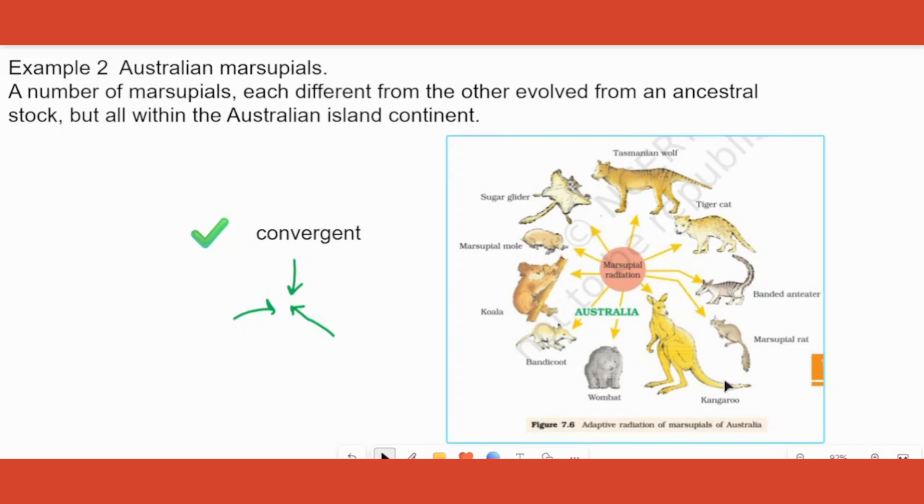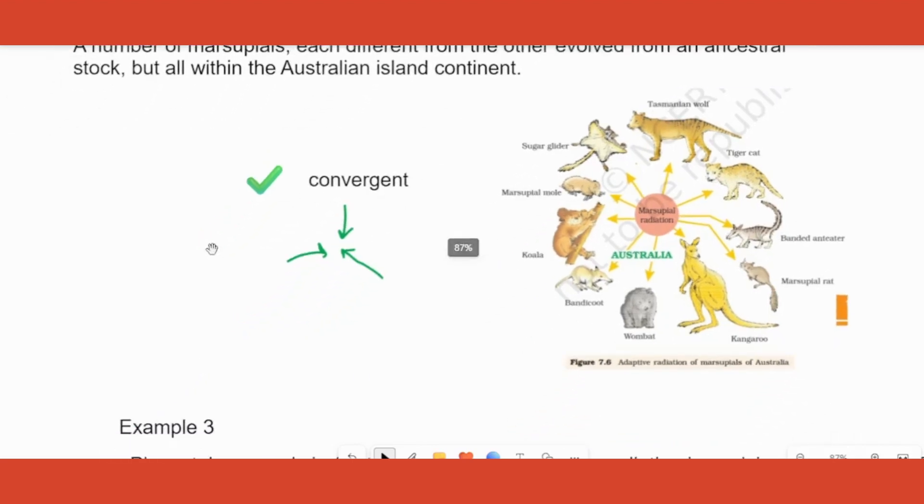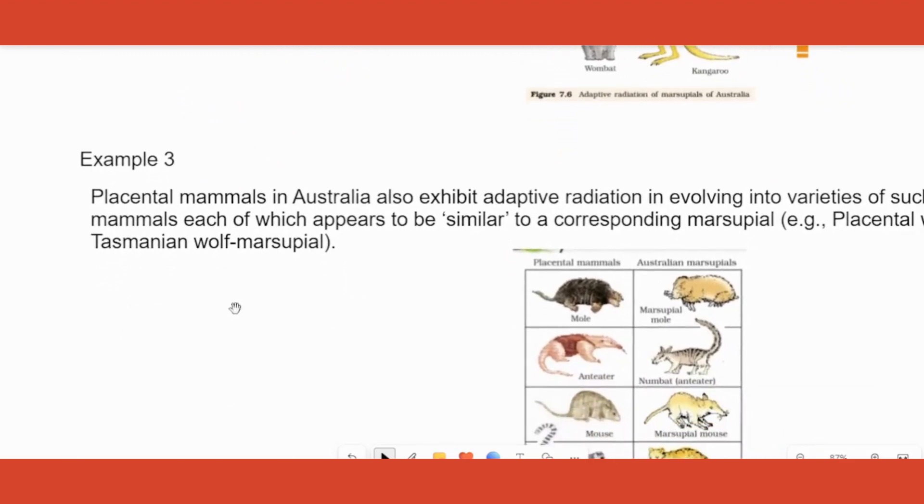they're all different from each other. However, for the same function some structure would develop. Pouch is the function, a pouch is the organ or part which has evolved, and the function of it is to take care of the young one. So the function converged. Please remember this, they'll ask you what kind of evolution happened here, and that is convergent. All these are one or two marks, please don't skip all these children.